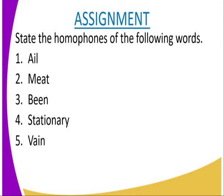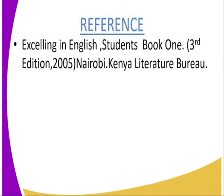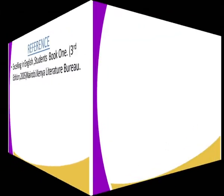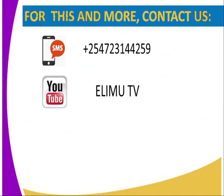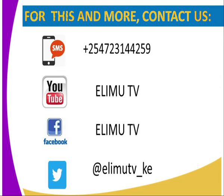As an assignment, state the homophones of the following words: 'ale,' 'meat,' 'bean,' 'stationary,' and 'rain.' For reference, you can look up more on homophones in the Excel in English Students Book One, as printed by Kenya Literature Bureau. For more, contact us on our SMS line, on YouTube at Elimu TV, on Facebook at Elimu TV, and on Twitter at Elimu TV underscore KE. Thank you for the lesson.